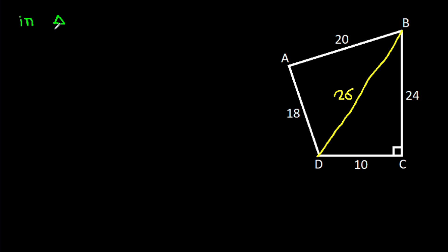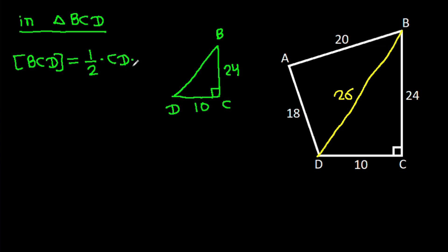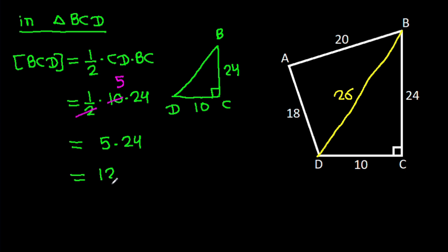Now in triangle BCD, angle BCD is 90 degrees, BC is 24, and CD is 10. So the area of triangle BCD is ½ × CD × BC = ½ × 10 × 24 = 5 × 24 = 120. So this area is 120.